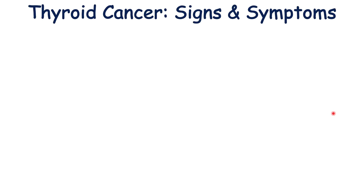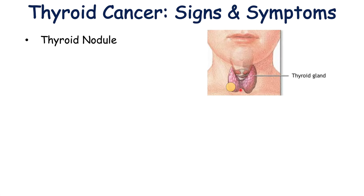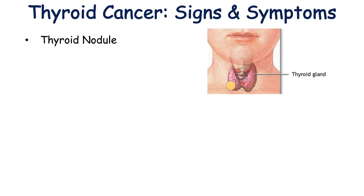By far the most important sign in thyroid cancer is a thyroid nodule — a little growth off of the thyroid gland. The thyroid gland is in the front of the neck, so patients may actually feel or see this little lump protruding from their neck. However, there are many patients who have thyroid nodules that don't have thyroid cancer, as thyroid nodules are actually not that uncommon.